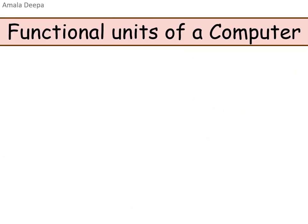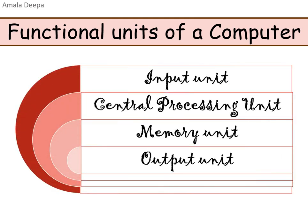A computer has four functional units: input unit, central processing unit, memory unit, and output unit. Listen attentively as I explain the functions of each of these parts of a computer with the help of a block diagram.